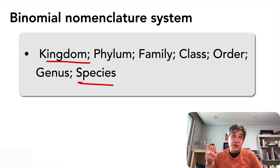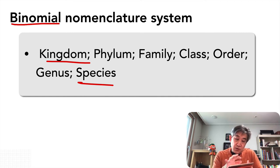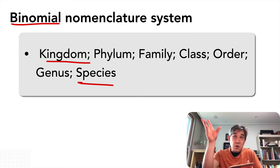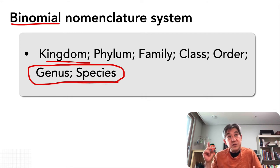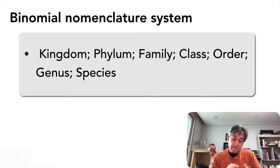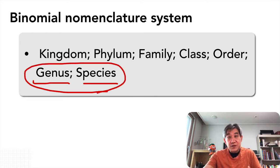According to the binomial nomenclature system, it goes from the biggest group to the smallest: kingdom, phylum, family, class, order, genus, species. In identifying one very specific species, two names are used — the actual species name plus the genus name one level above — to designate and identify a specific organism.